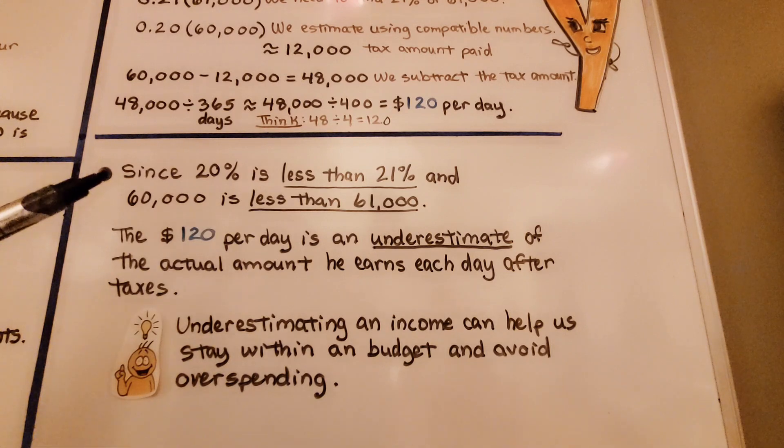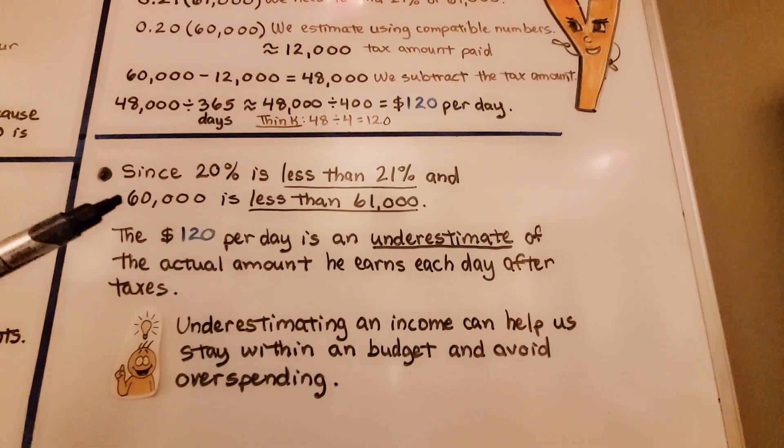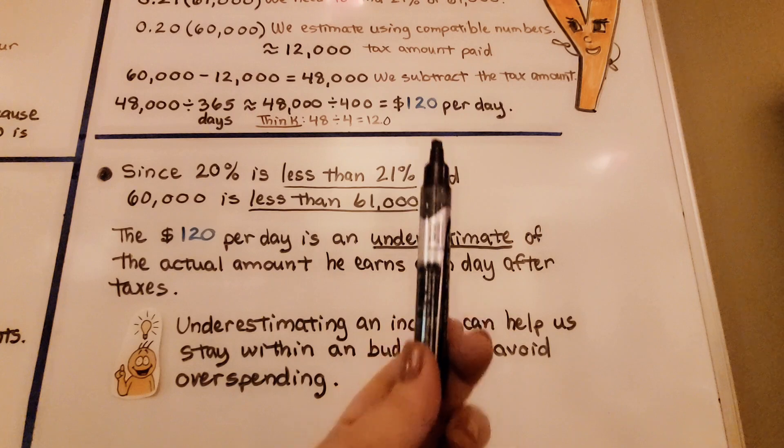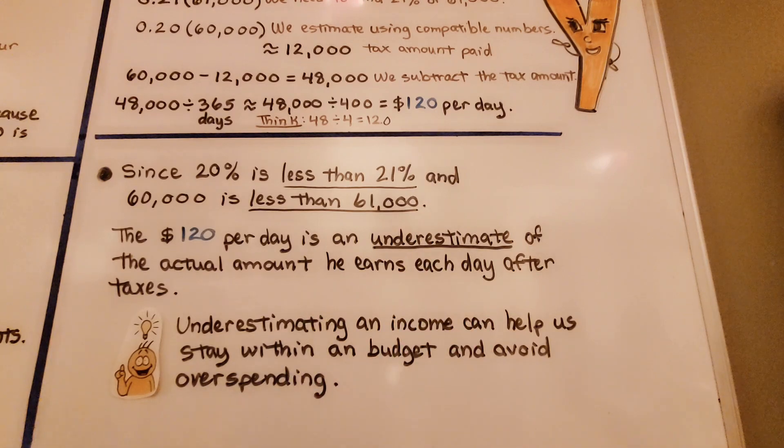Since 20% is less than 21% and $60,000 is less than $61,000, the $120 per day that we estimated is an underestimate of the actual amount he earned.